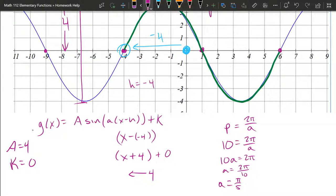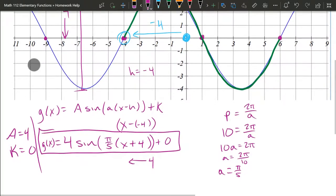Our plus k is plus zero, or you can just skip writing that. Little a is pi over five. I'm just filling in the rest to get that. We have sine, and then big A we got was four. All right, so that's our g of x function right there. That's how to get all the pieces.